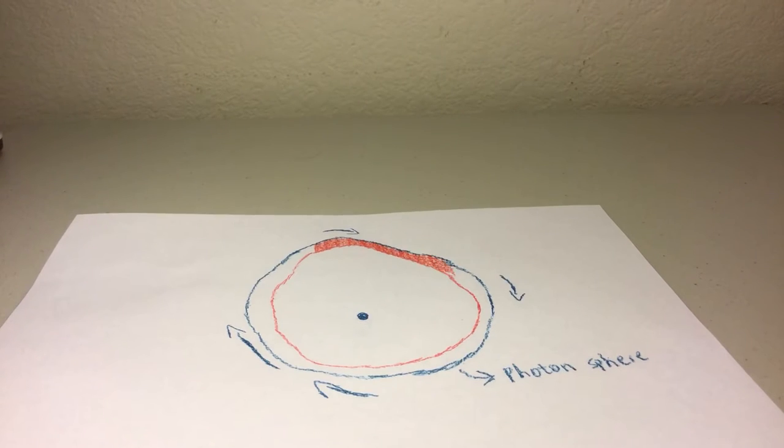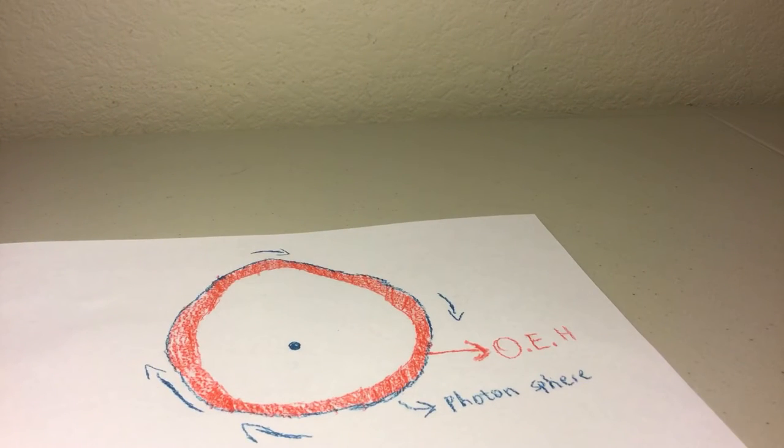Next, we have the outer event horizon. This part of the black hole does not have as strong of a gravitational pull. As a result, you could still escape from here.